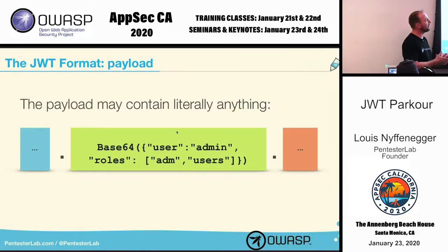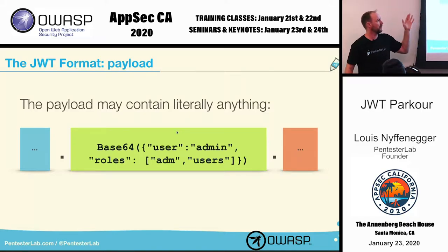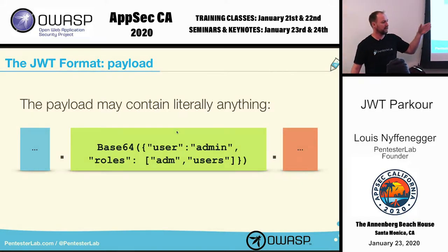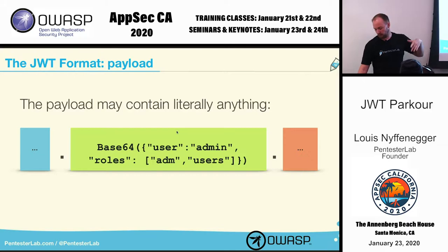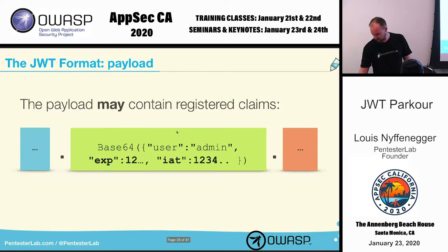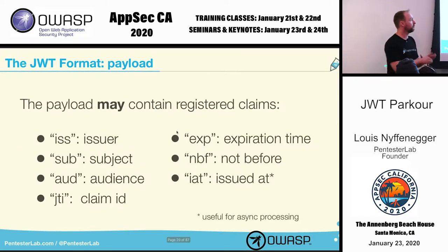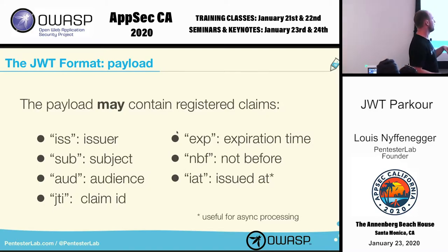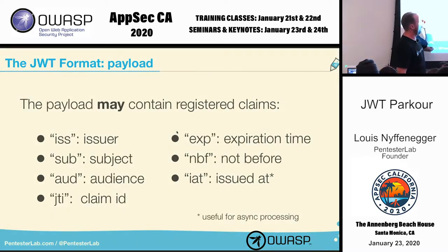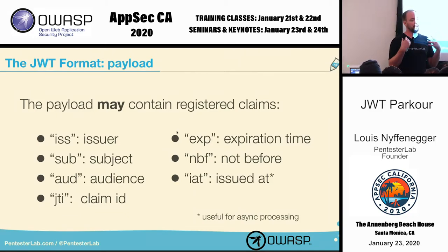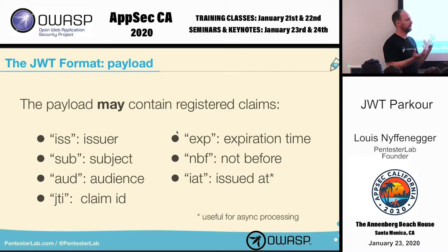Moving to the payload — it's basically whatever you want to put in it: username, roles, whatever JSON you like. You have reserved claims as part of the body: issuer, subject, audience, JTI, and expiry, which is really important. When you sign something, you really want the token to expire after a while — otherwise it's valid forever and you can't have repudiation.